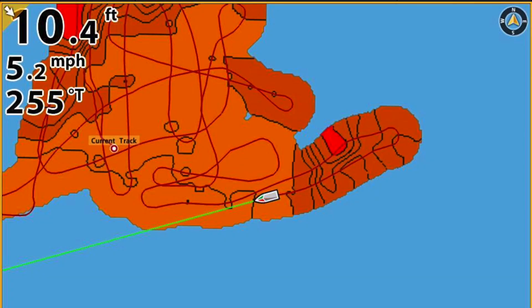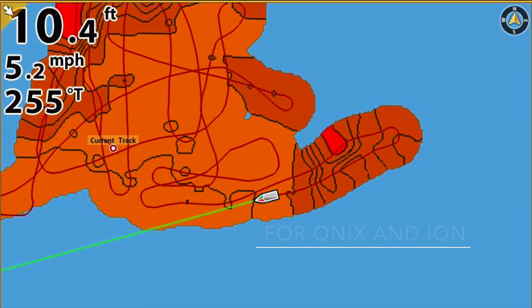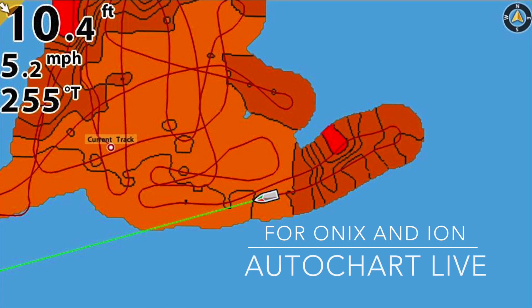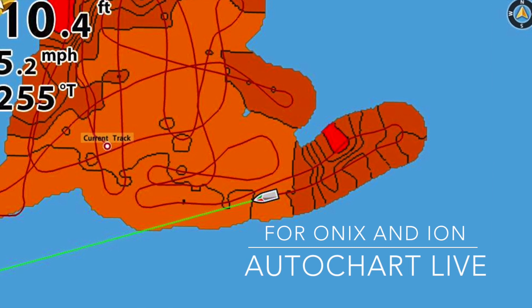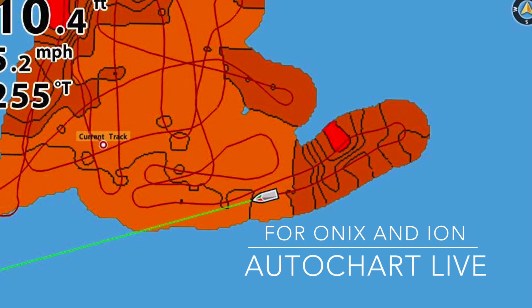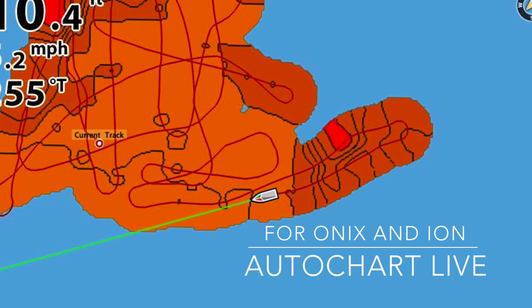Now Humminbird Onyx and Ion users can take a dramatic leap in underwater cartography with a complete, fully on-the-water custom mapping solution. This is AutoChart Live.